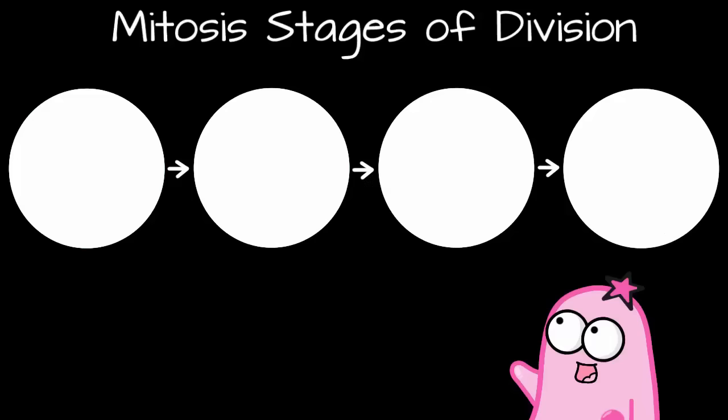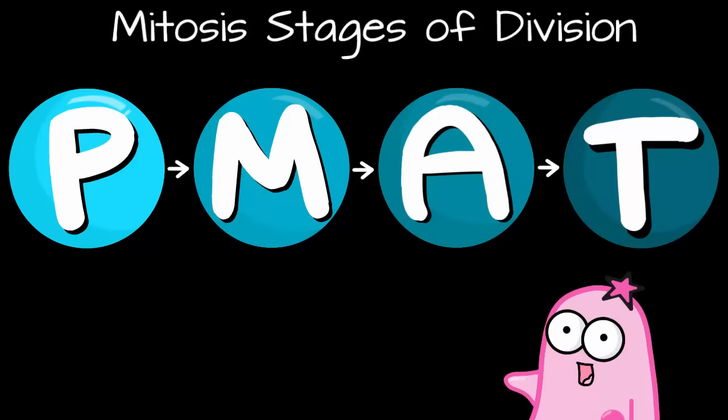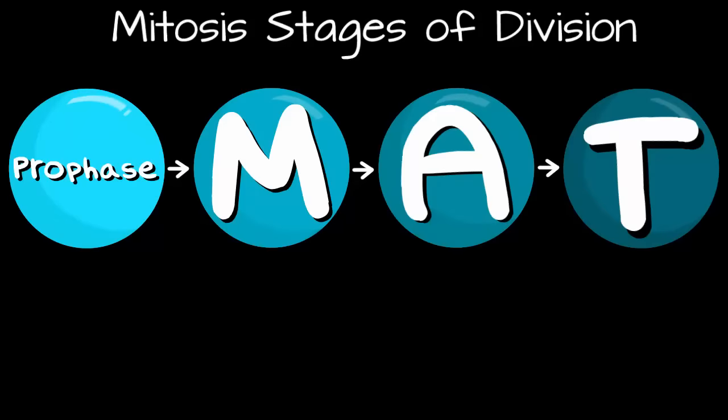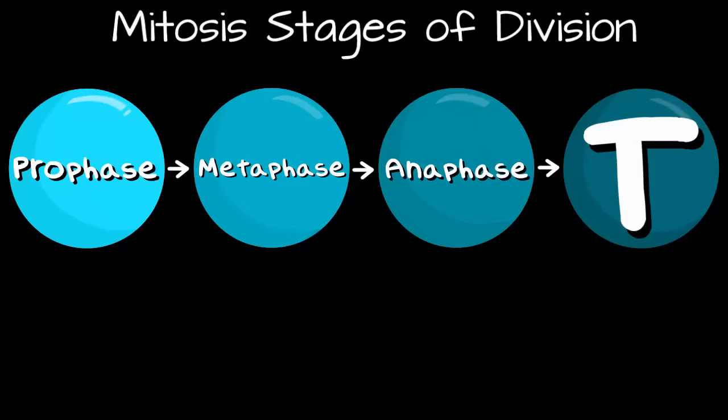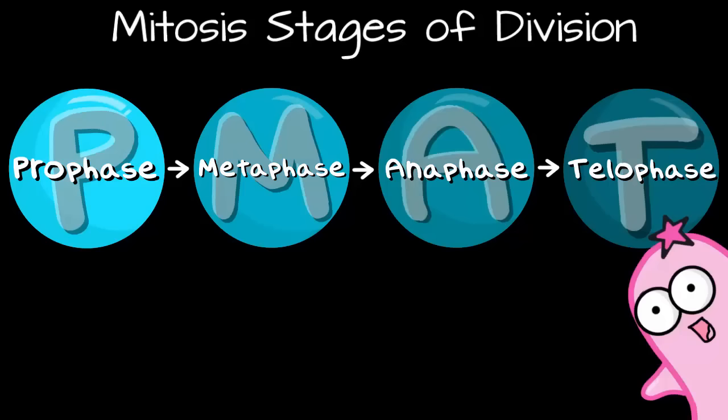Okay, so now we can get right into mitosis. I like to tell students to remember PMAT. It's a little acronym that helps you remember. The P is for prophase, the M is for metaphase, the A is for anaphase, and the T is for telophase. So remember PMAT. The stages are in order.